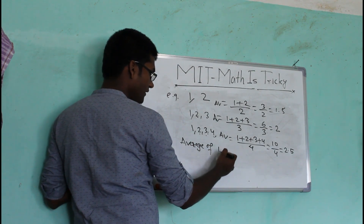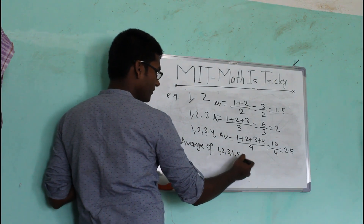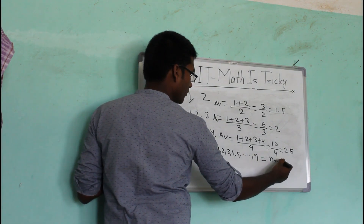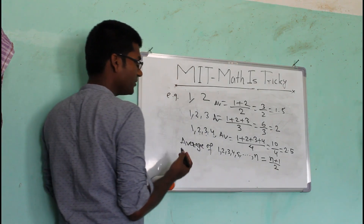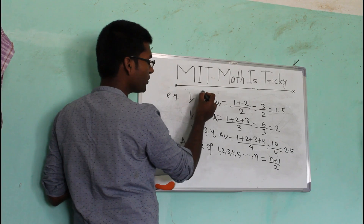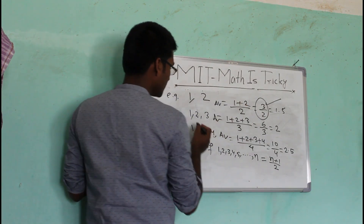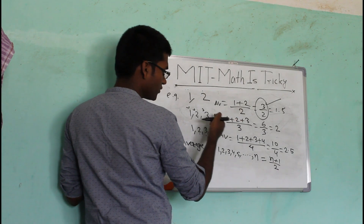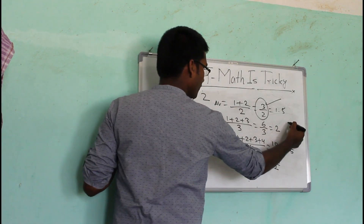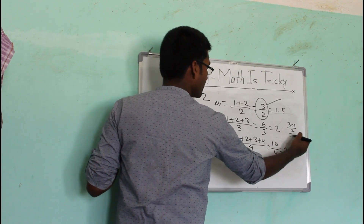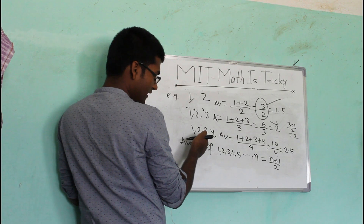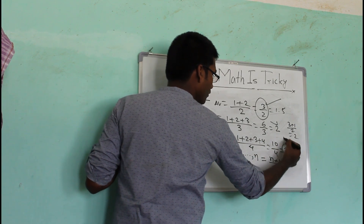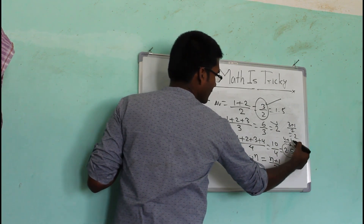The average of 1, 2, 3, 4, 5, ... up to n is simply (n + 1) / 2. You can check: for 1 and 2, that's (2 + 1) / 2 = 3/2 — correct. For 1, 2, 3: (3 + 1) / 2 = 4/2 = 2 — correct. For 1, 2, 3, 4: (4 + 1) / 2 = 5/2 = 2.5 — correct.